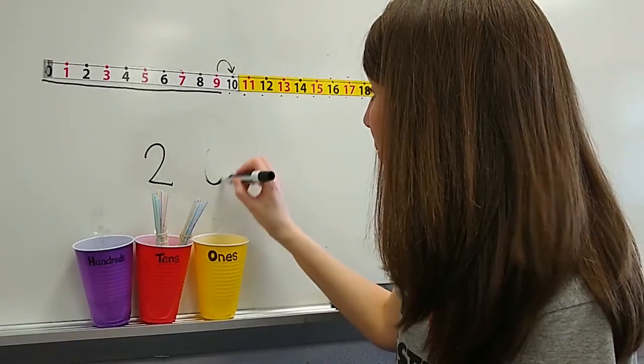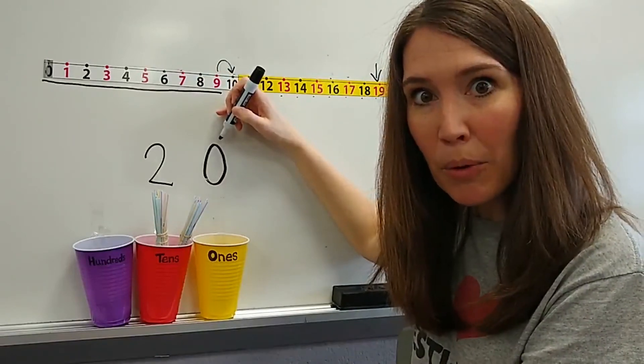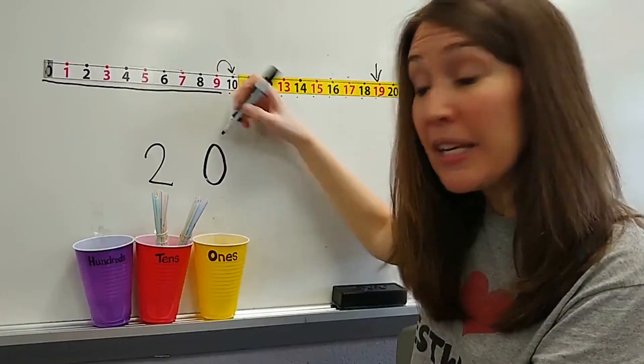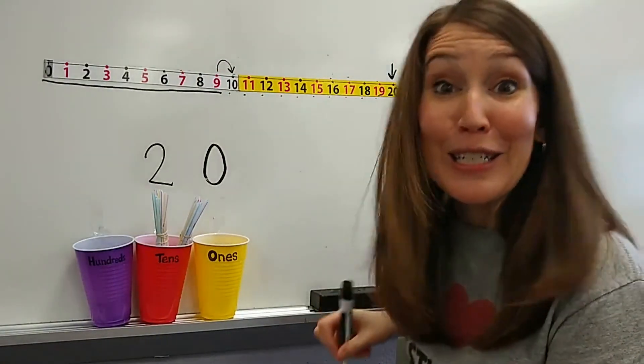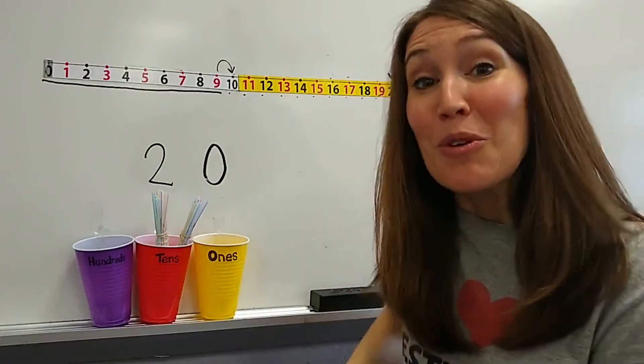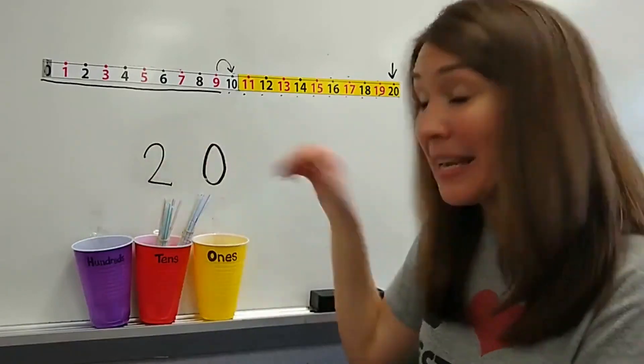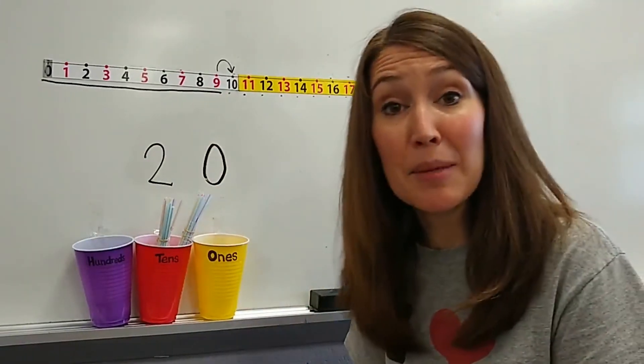If I have two groups of 10 and zero little ones, what is my number? Let's sing it. Two groups of 10 and zero little ones. My number here is 20. So when you enter the 20s family, that means every number is two groups of 10 and some ones. Two groups of 10 and some more.